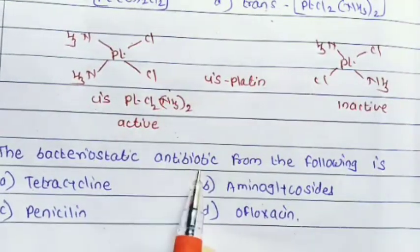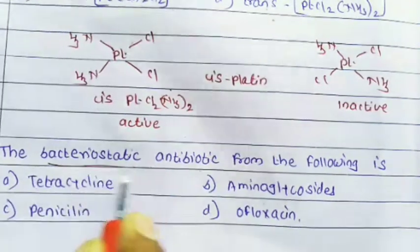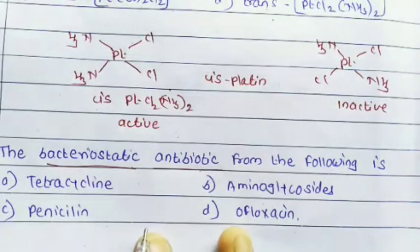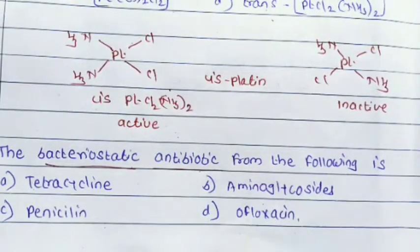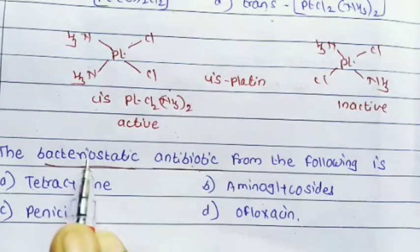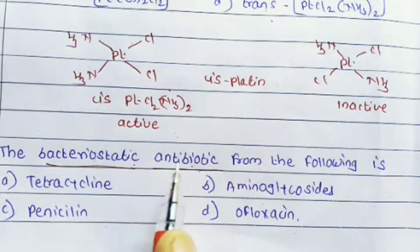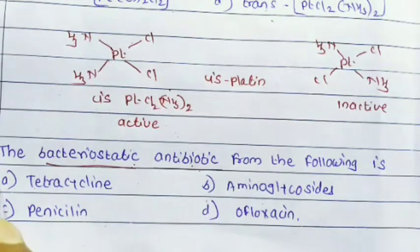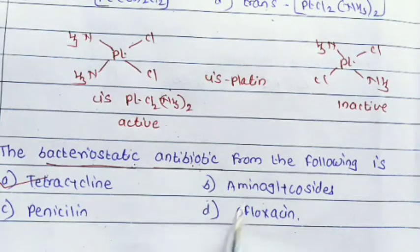Next question: which is the bacteriostatic antibiotic from the following — tetracycline, aminoglycosides, penicillin, or ofloxacin? Antibiotics are of two types: bacteriostatic and bactericidal. Out of these four, tetracycline is the bacteriostatic antibiotic; the remaining three are bactericidal.